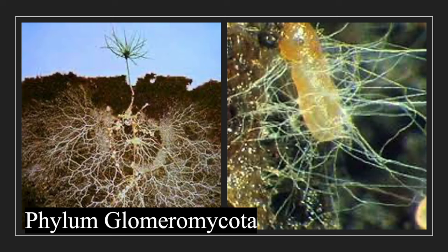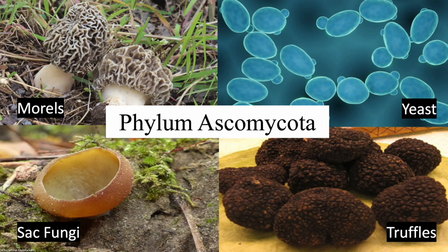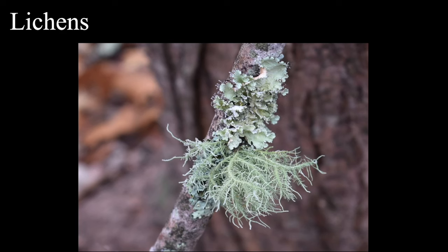Phylum Ascomycota is the largest fungal phylum and is incredibly diverse. Morels and truffles are culinary delights. Yeast make bread, beer, and wine. Sac fungi can be found in a wide range of habitats, including marine, freshwater, and terrestrial ecosystems. Species in this phylum live on soil, on dead wood, as plant pathogens, and in symbiotic relationships like lichens.